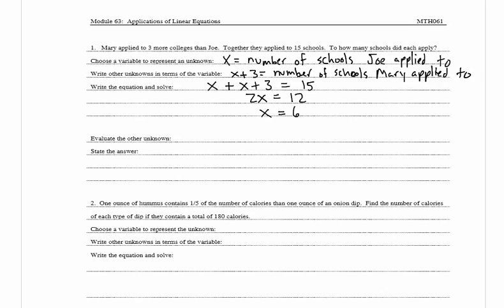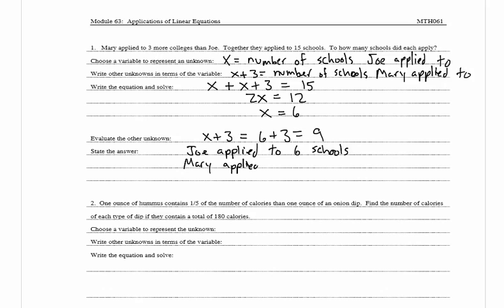If x is equal to 6, that means Joe applied to 6 schools. Now we evaluate the other unknown: x plus 3, where x equals 6, so 6 plus 3 equals 9, which means Mary applied to 9 schools. So we can state the answer: Joe applied to 6 schools and Mary applied to 9 schools.